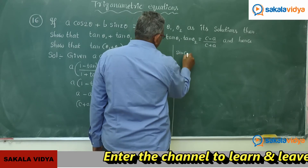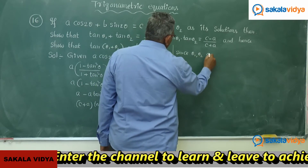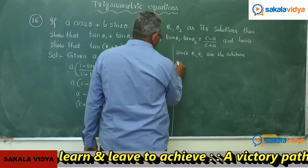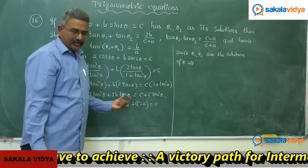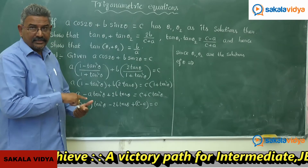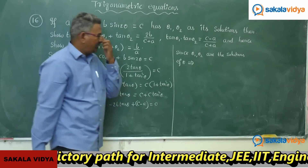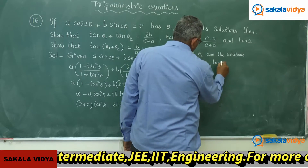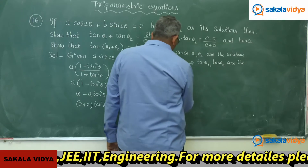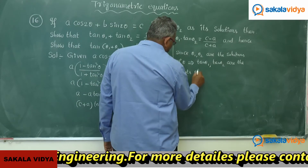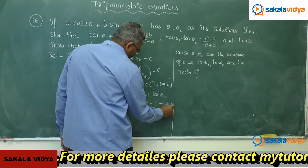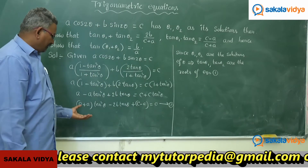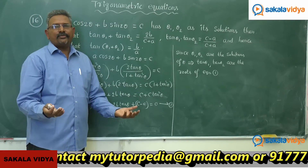Since θ₁ and θ₂ are the solutions of θ, this equation has two roots: tan θ₁ and tan θ₂, because it is a quadratic equation in tan θ. That implies tan θ₁ and tan θ₂ are the roots of this equation — call it equation (1). Being a quadratic equation, we can find the sum and product of the roots very easily.